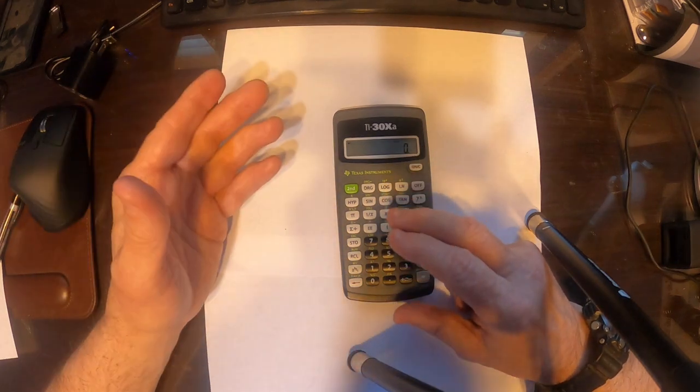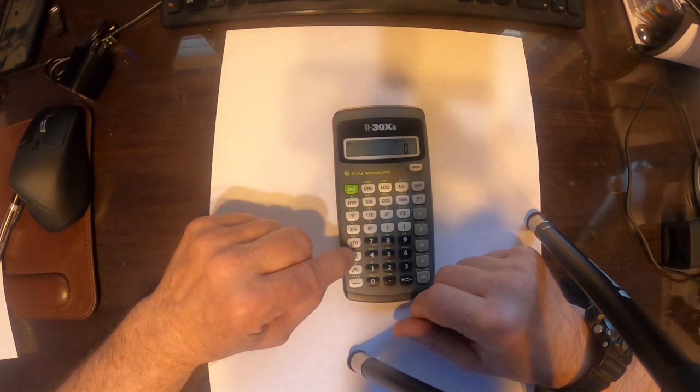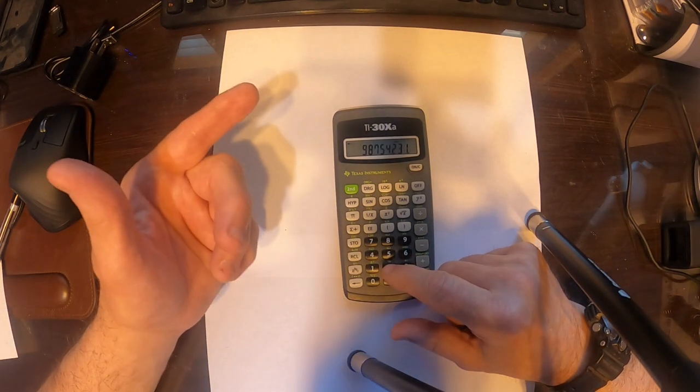Now it's in memory 1. So let's say we're going to do some more calculations. Now we're ready for that number to use it. Just press recall, RCL, and then the number you put it in, and there it is.